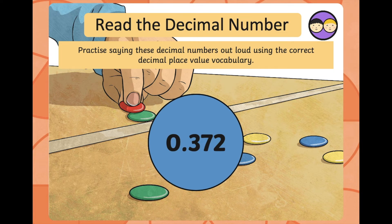This is 0.372. The reason we don't say 'three hundred and seventy-two' is because the 3 isn't in the hundreds column — it's in the tenths column. 7 isn't in the tens column — it's in the hundredths column. And 2 isn't in the ones column — it's in the thousandths column. That is why we say each individual digit after a decimal point: 0.372.